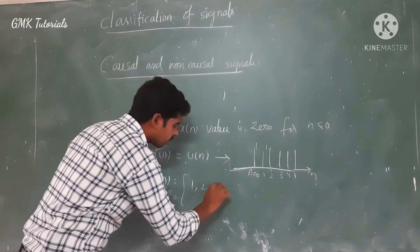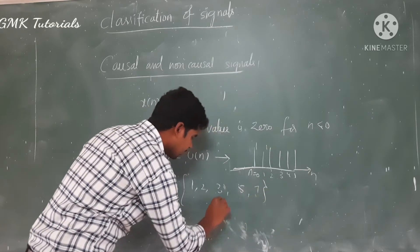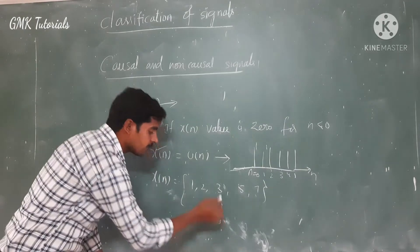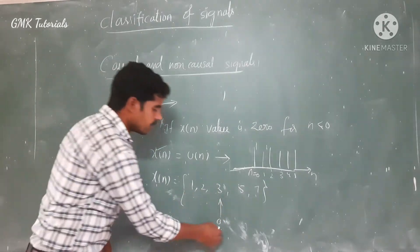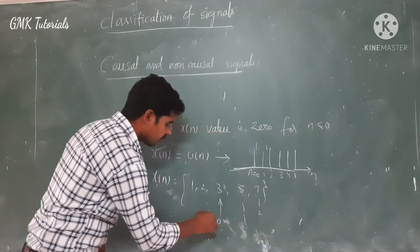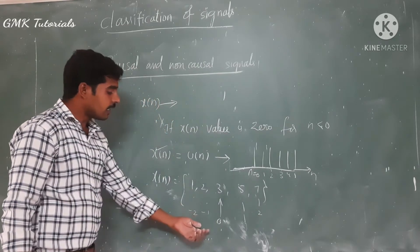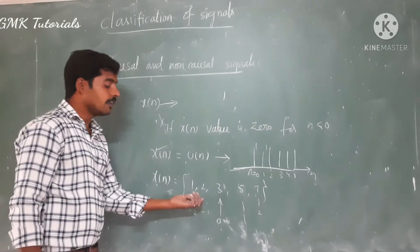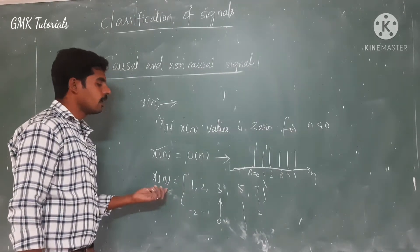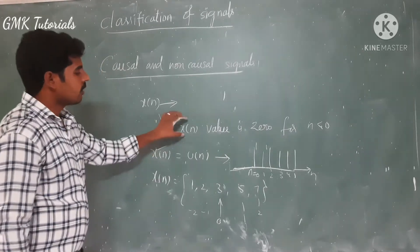Suppose we consider a sequence x of n equal to something like 1, 1, 2, 3, 5, 5, 7. In this given sequence, the arrow indicates the starting point — that means we consider n equal to 0 as the first position. The position to the left is n equal to minus 1. That means in this example, for n less than 0 values, the value is also existing.